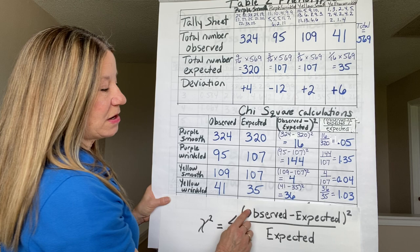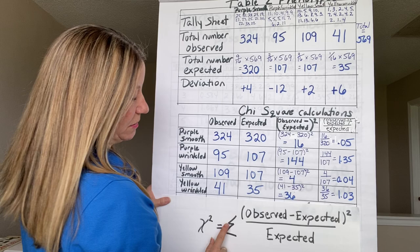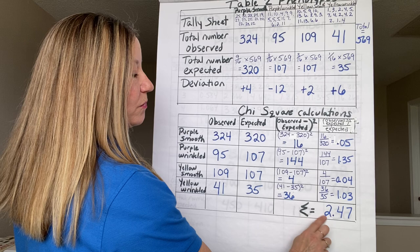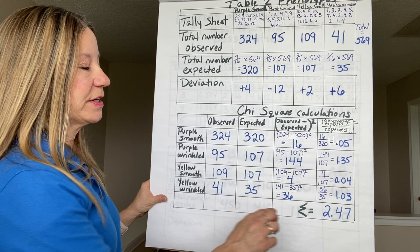The last step of my chi-square: I've done all of the observed minus expected for all four phenotypes, and the last step is to add them up. I get a value of 2.47. So what does this value mean? This is called a critical value in chi-square.